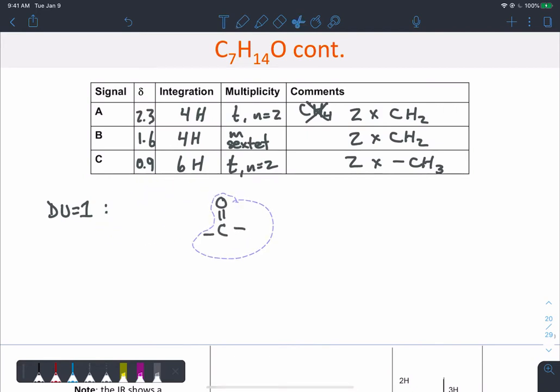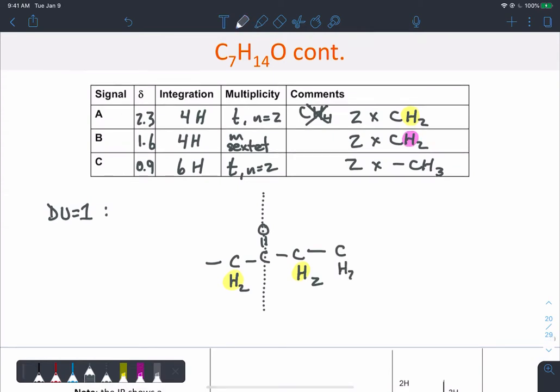Okay, so that carbonyl group is a nice center point for the molecule. We've got a peak around 2.3, so that can be these CH2 groups right next to the carbonyl. They'd be chemically equivalent with this line of symmetry right down the middle there. Okay, then maybe we have these two other CH2s, two other methylenes. Okay, maybe they're there, then ending off with those two methyls.